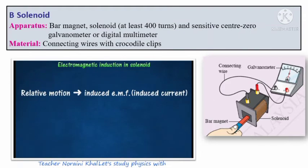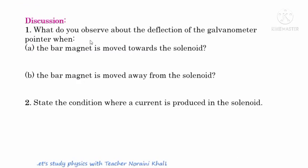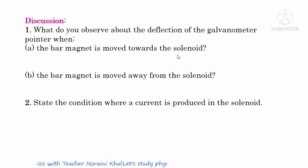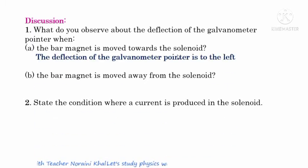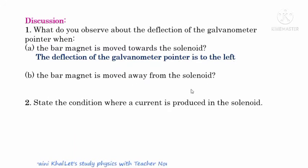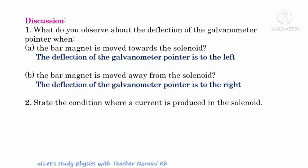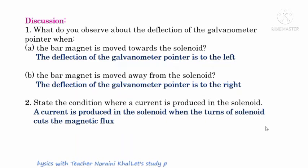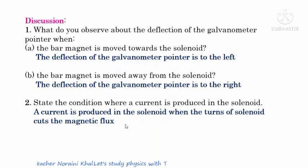So from this activity, we can see that there must be relative motion in order to produce induced EMF or induced current. When the bar magnet is moved towards the solenoid, the deflection of the galvanometer pointer is observed. A current is produced in the solenoid when the turns of the solenoid cut the magnetic flux. In order to produce the cutting of magnetic flux, there must be relative motion.